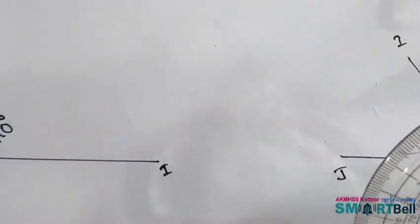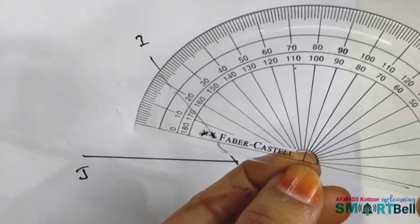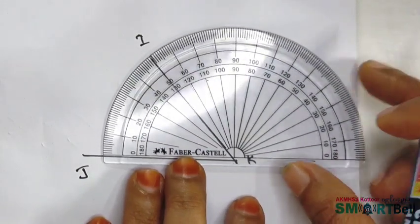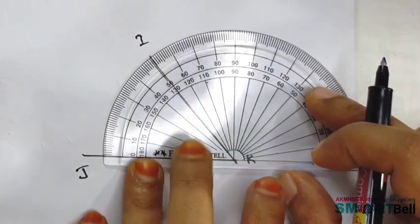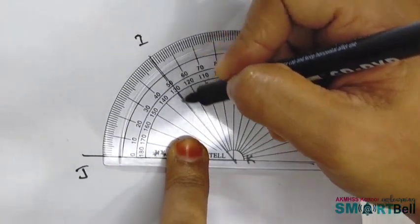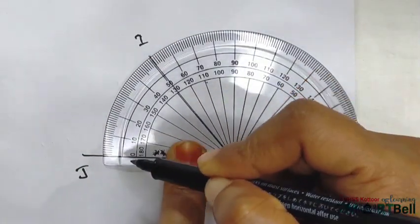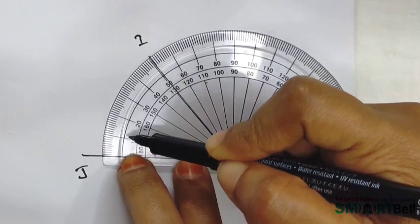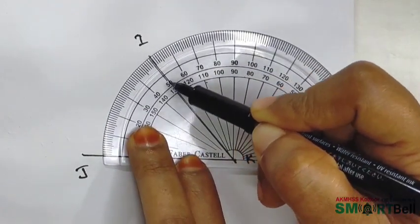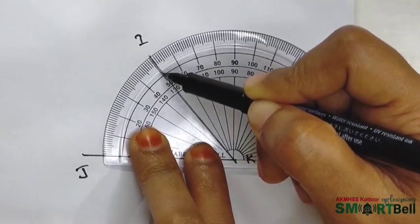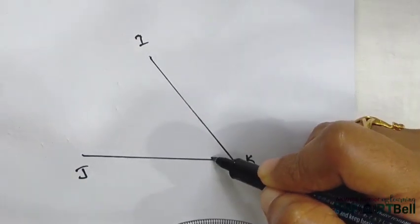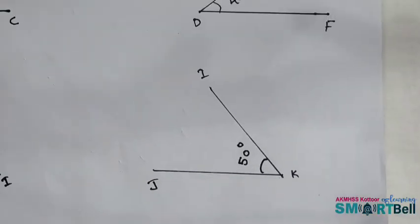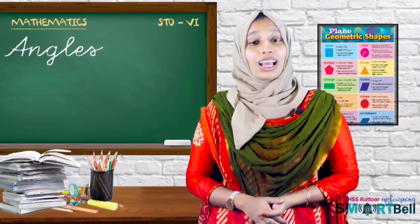And the fourth one. Keep the center point of the protractor on the vertex. Then, look at this. The line passes through - first of all, please simply focus on zero. What is the zero? Zero, 10, 20, 30, 40, 50. The line passes through the point 50. So, the left side angle is 50 degrees.